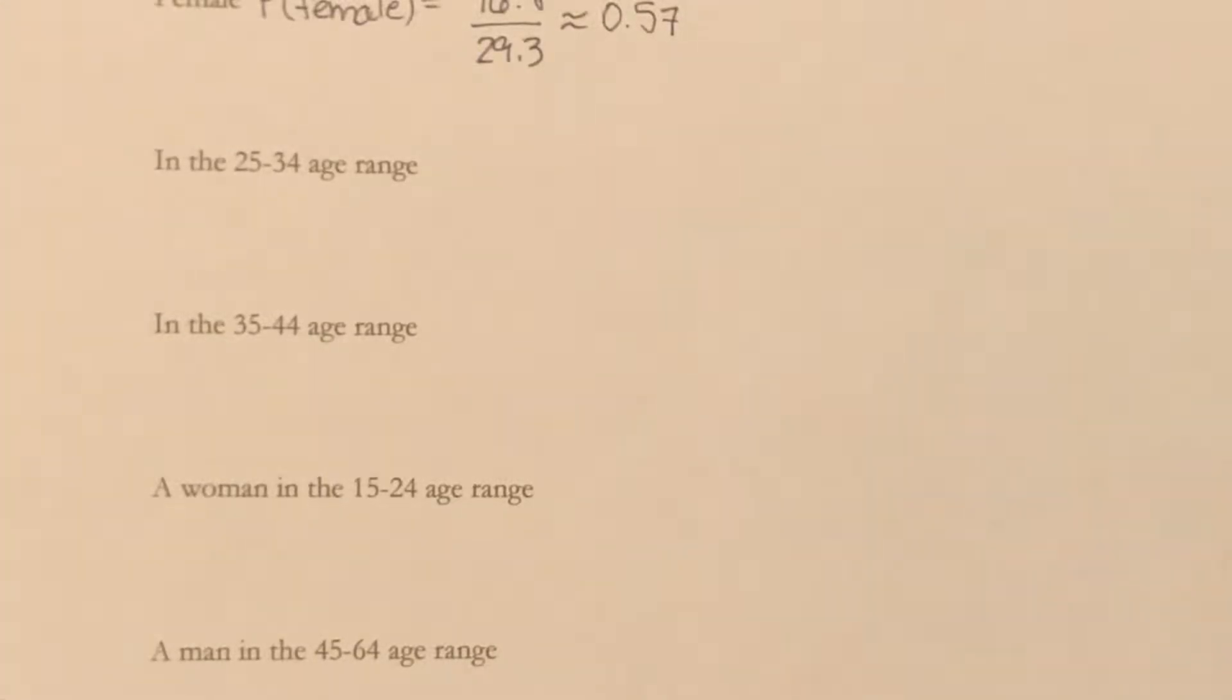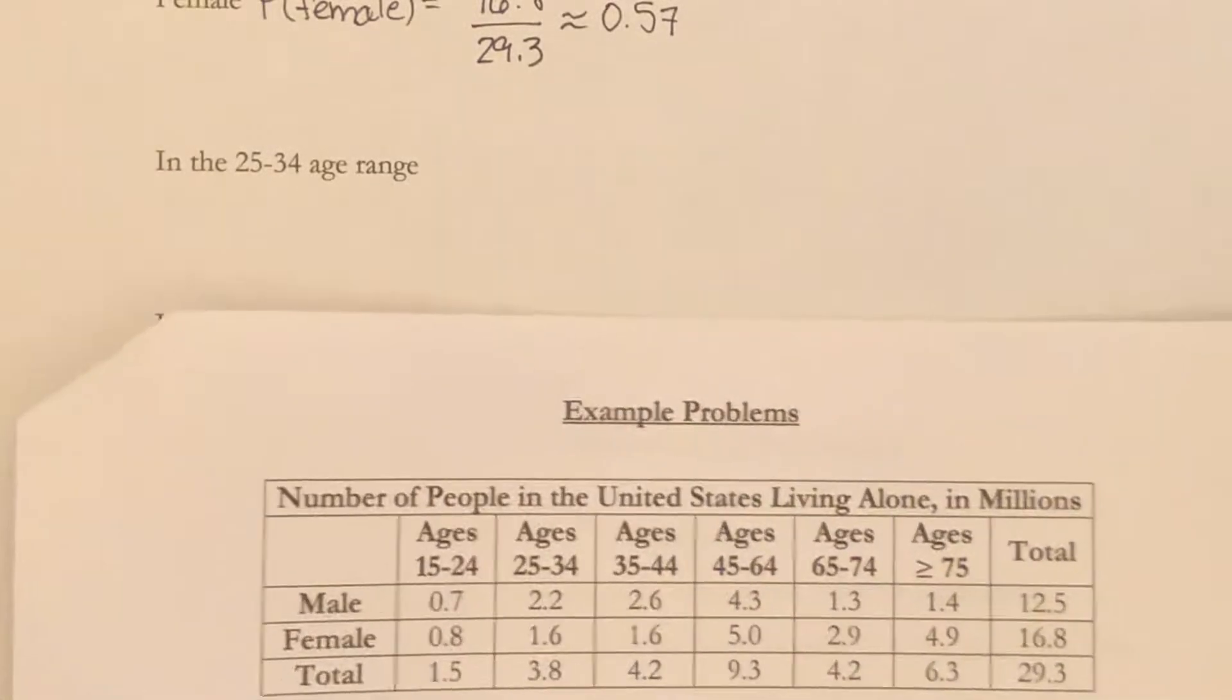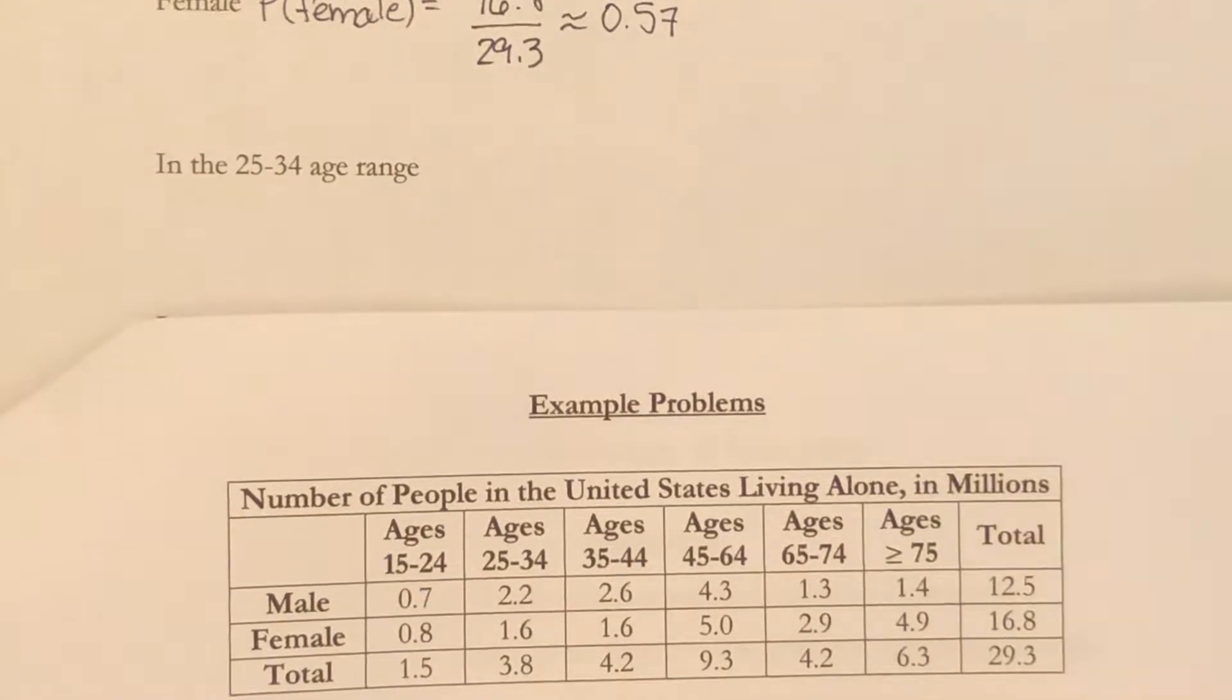This is part four of section 11.4. We are continuing the example problem with empirical probabilities using this set of data here where it's the number of people living alone.